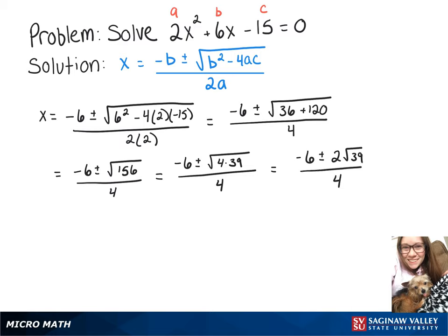So we'll have two possible x values here. We'll have x equals negative 6 plus 2 root 39 over 4 or x equals negative 6 minus 2 root 39 over 4.